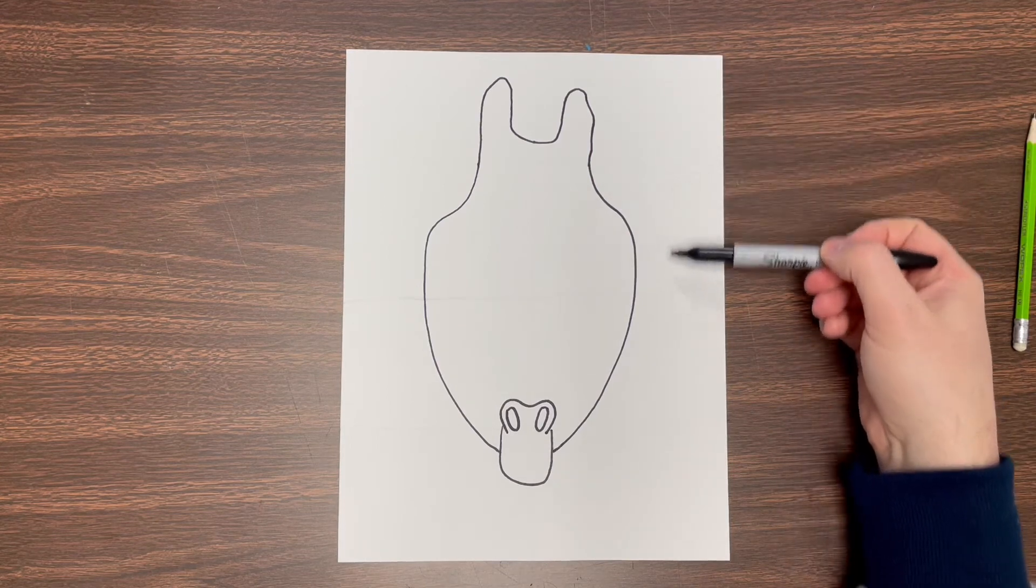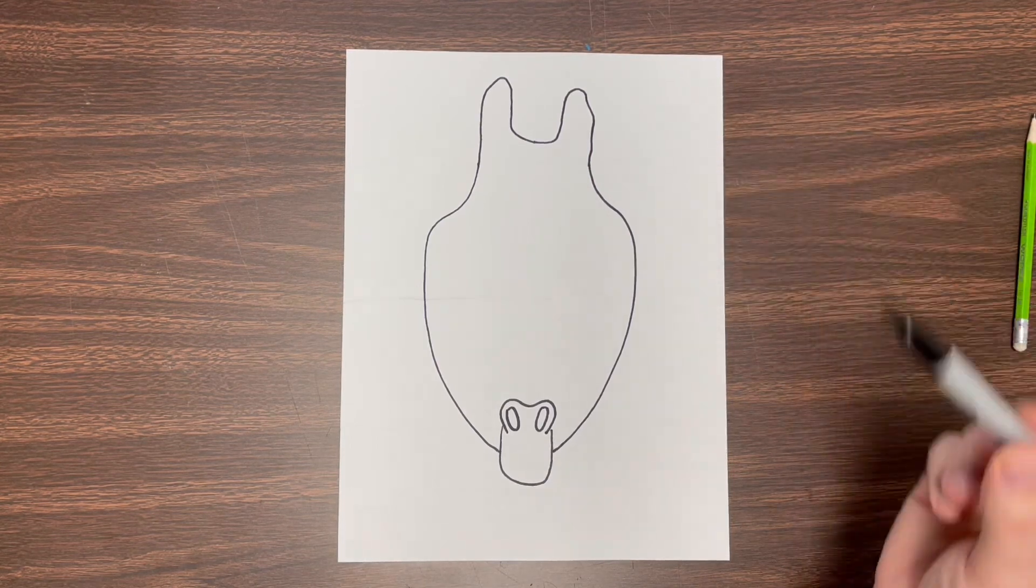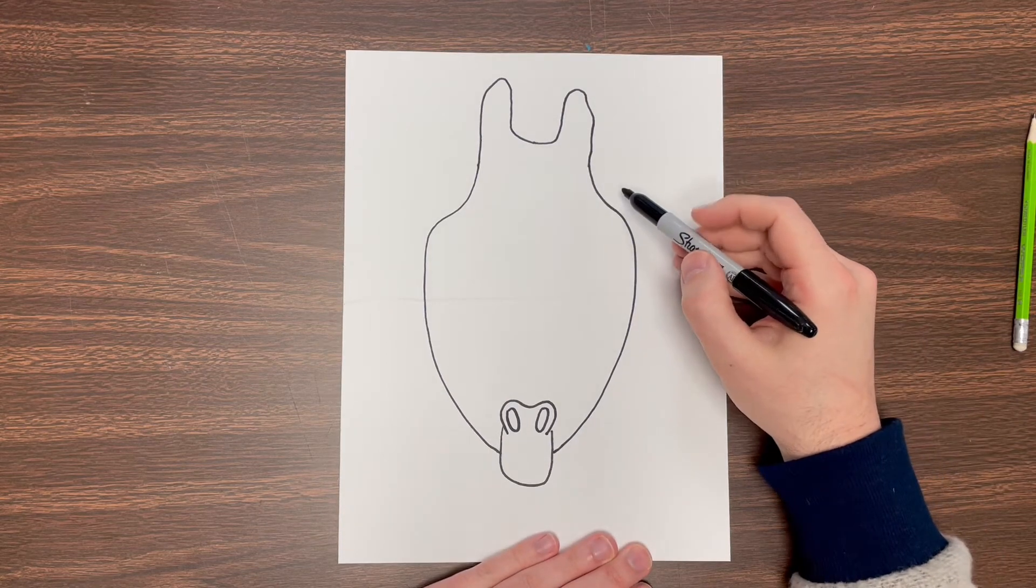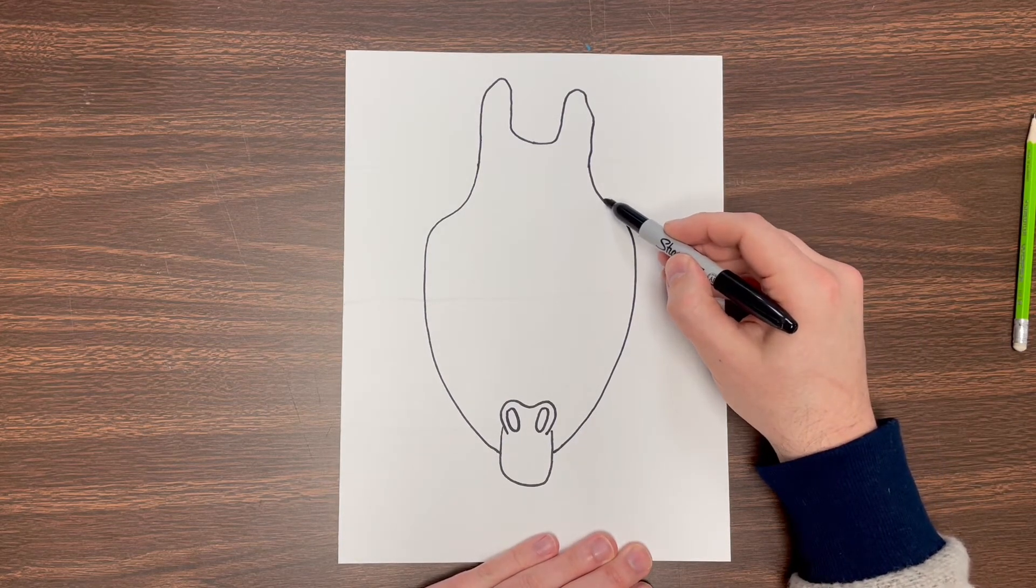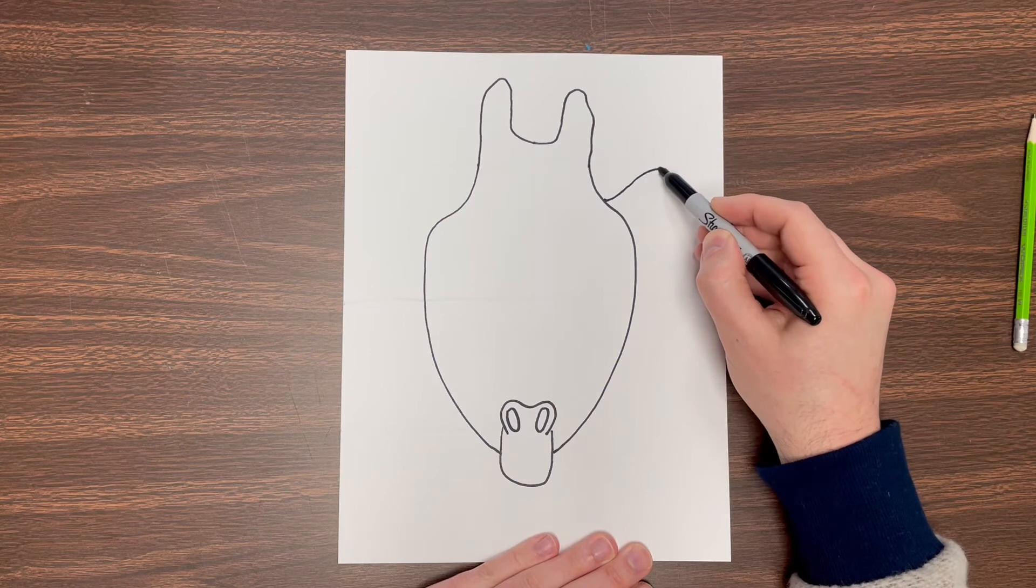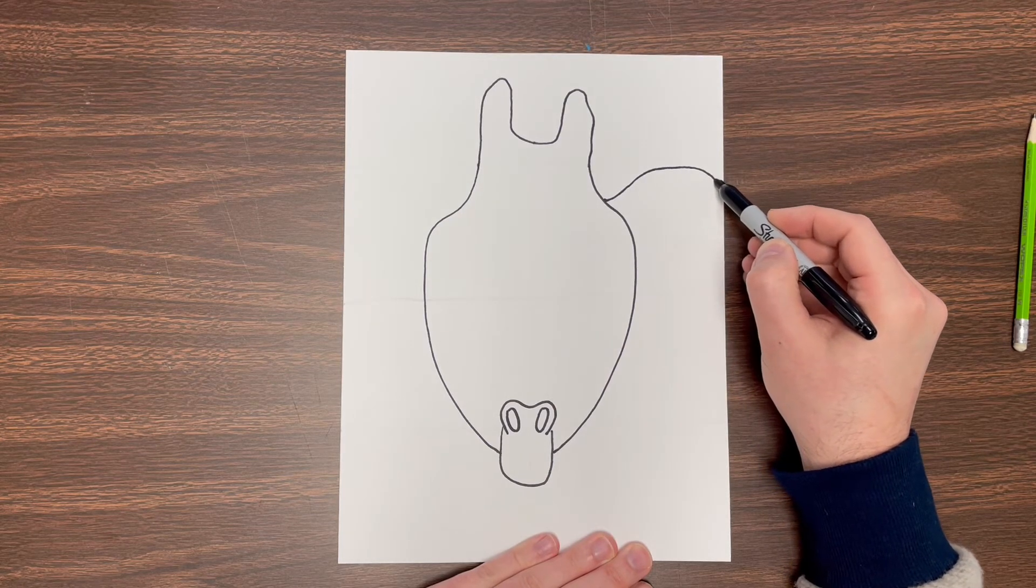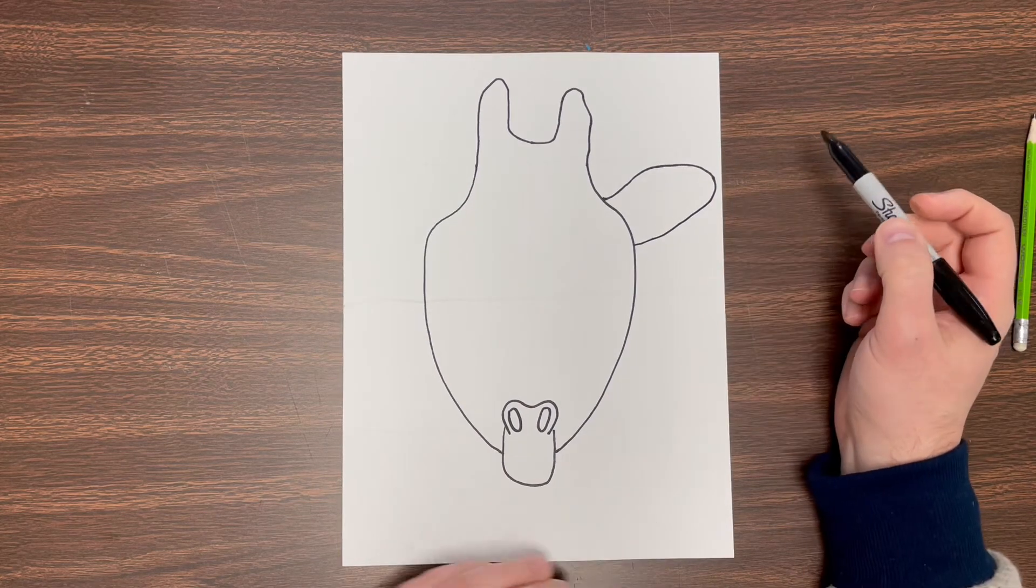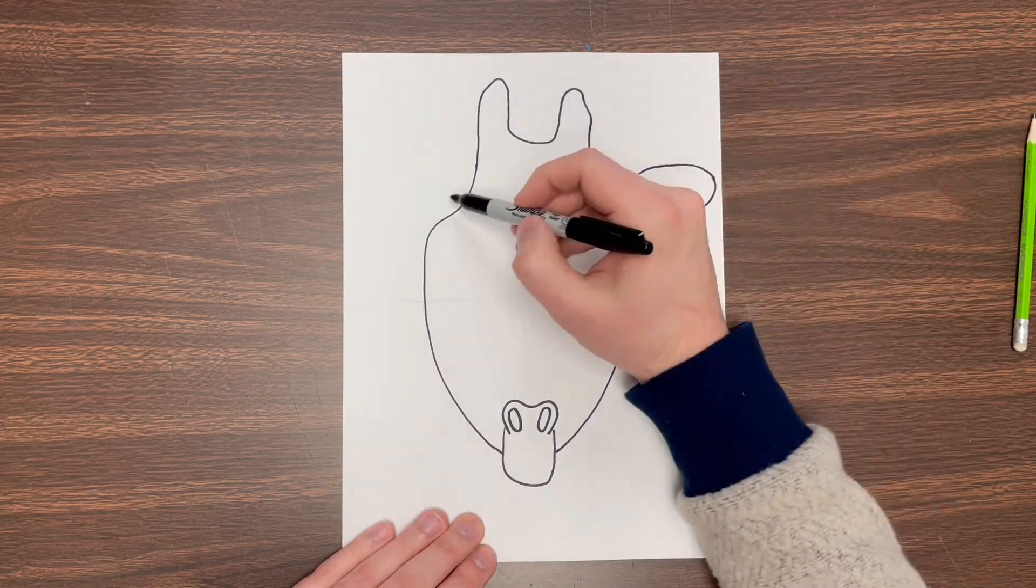Now in this second section here, in between these lines, this is where we're gonna do the ears. I'm gonna start with this one and go up to about that line almost to the edge of my paper and then curve it back. I'll do the same thing on this side.